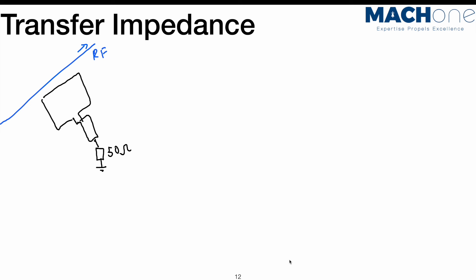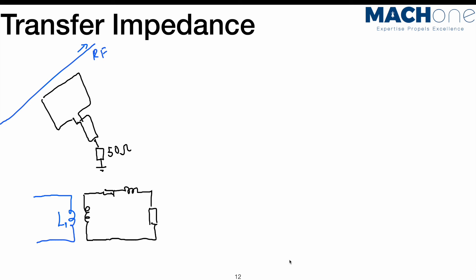The question is: what is this signal we're measuring? If I draw this, the wire under test can be represented by just an inductor. I can then represent the loop I use by having another element. We have the self-inductance L1 of the wire under test, and there is current going through it. This is a high-frequency current, so the voltage across this inductor is simply V1 = L1 · di/dt.